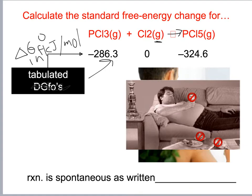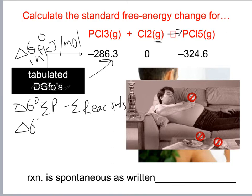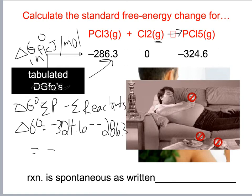For example, chlorine exists as a diatomic gas at standard state, so its delta G naught of formation is zero. Delta G naught equals negative 324.6 minus a negative 286.3, which equals negative 38.3 kilojoules.